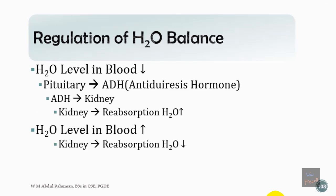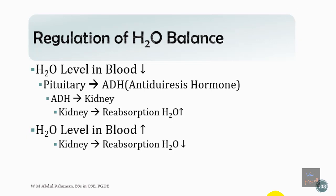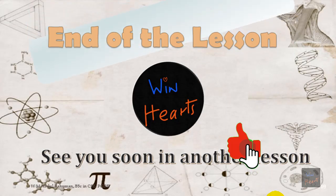To regulate water balance, the pituitary gland releases ADH, or antidiuretic hormone. ADH acts on the kidney to increase reabsorption of water when the water level in the blood drops. When water levels are higher, the kidney reduces water reabsorption. Most chemical coordination is important for maintaining homeostasis — ADH regulates water balance, and insulin and glucagon regulate blood glucose levels. That concludes the session. Do you have any questions?